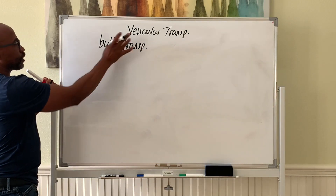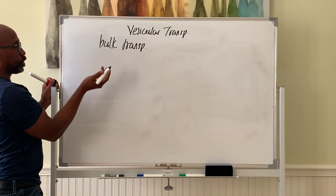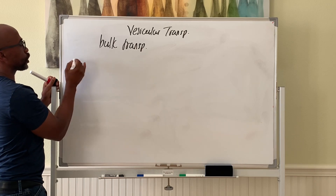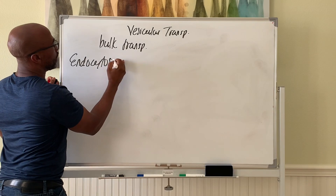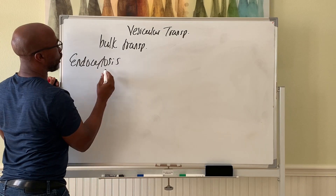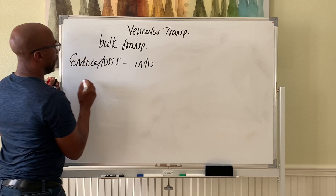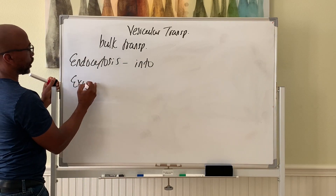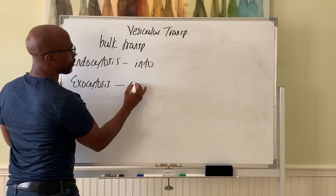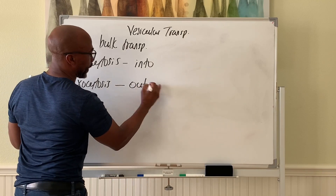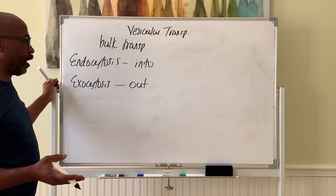This form of transport is done in two directions. One direction is called endocytosis, where you move things into the cell. Then you have exocytosis, moving things out of the cell. This is the basic technique of each.